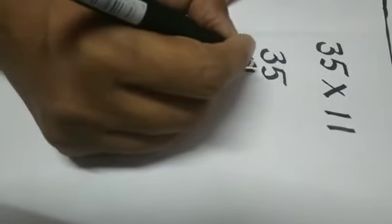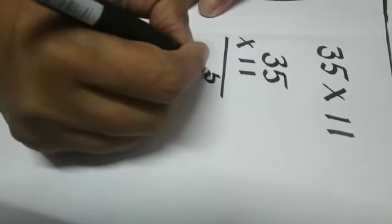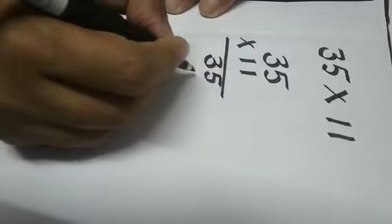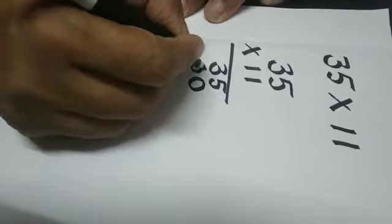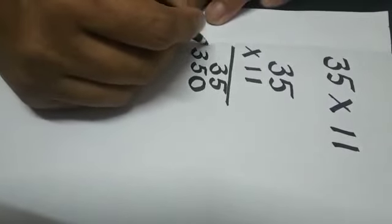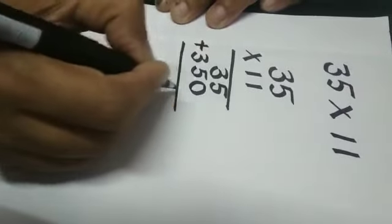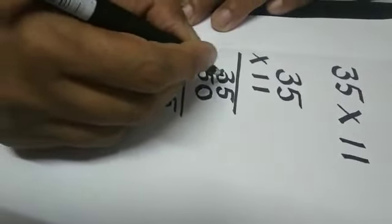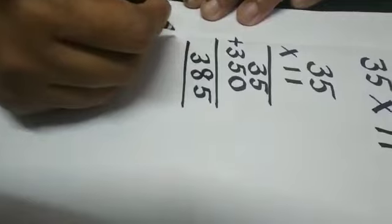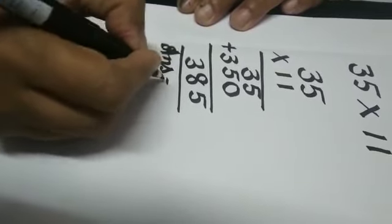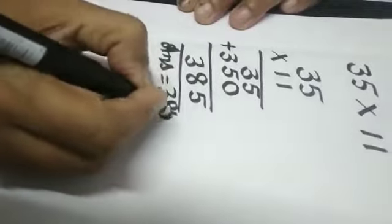First we will do two digits — multiply 35 by 11. You write 35 here, multiply by 11. First you multiply by ones: five ones are five, three ones are three. When you start with the tens, you put a zero. Five ones are five, three ones are three. You put a plus sign, add, and write: five plus three is eight, three. So the answer is three hundred and eighty-five.